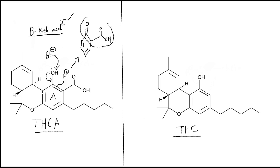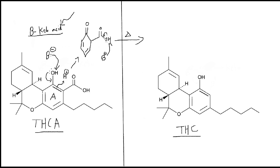This beta-keto acid can readily undergo decarboxylation when we add heat — for example, like when you light up a cigarette, you add heat. The base takes this hydrogen, and here we form a double bond between the oxygen and the carbon. This bond goes back to form the double bond of the benzene ring, and the carbonyl becomes an alcohol again.